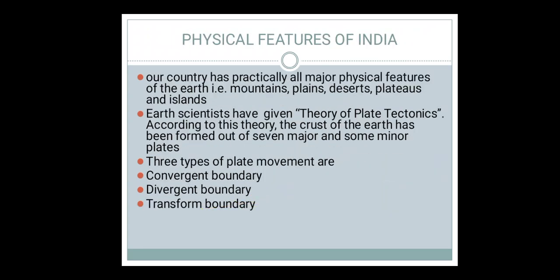Now the question arises: how are these physical features made? Beneath the earth there are many tectonic plates — seven major and some minor. There is movement in these plates because they are floating on molten magma. When there is movement, they sometimes collide with each other, and a new physical feature is formed. In this way, mountains, plains, deserts, plateaus, and islands are formed.